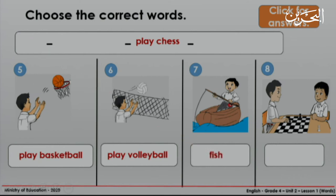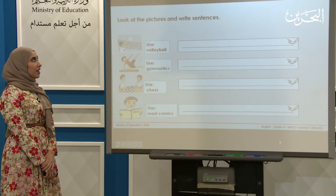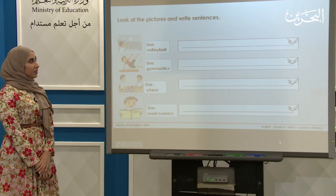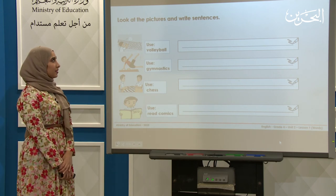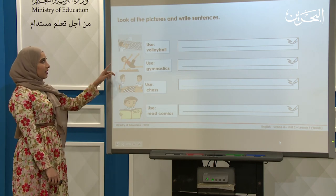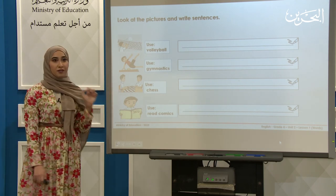Picture seven — it's fish. And finally, picture number eight — it's play chess. Now let's go to the next slide. I want you to look at the pictures and write sentences. Here I want you to use the word volleyball.